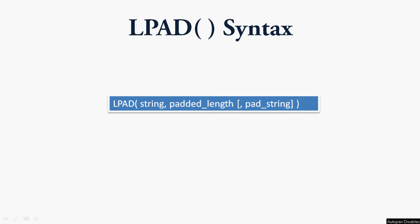Here we can see the syntax of the LPAD function: LPAD(string, padded_length, pad_string). We will see each parameter one by one. The first one is the string parameter — this is the string to pad characters to on the left side. The next one is padded_length, where we specify the number of characters to return. If the padded length specified is smaller than the string, the LPAD function will truncate the string to the size of the padded length.